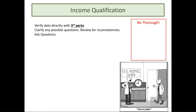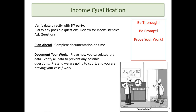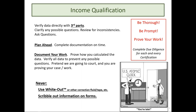Once we have collected information about the household's income, we need to third-party verify all of it with employers, DSHS, Social Security, etc. In doing income qualification, plan ahead, give yourself enough time, and document all of your work. Prove how you calculated your work. Verify all the data. Pretend you're going to court and proving your case — you should have all documentation showing where you obtained the information. Be thorough, be prompt, and prove your work.